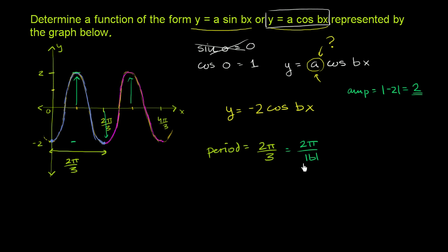And you can solve this multiple ways. You can multiply both sides by 3 and the absolute value of b. And you will be left with the absolute value of b is equal to 3, which means that b could be equal to positive or negative 3.